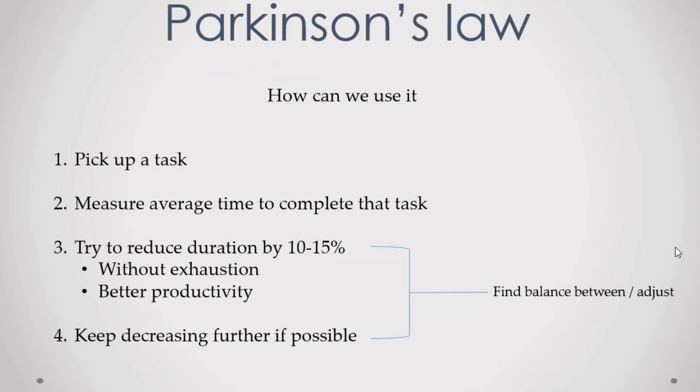Pick up a task. Pick up any task, then measure average time to complete that task. Then try to reduce the duration of that task by 10 to 15 percent without exhaustion and with better productivity. We can find a balance between these two. Keep decreasing it further if possible.